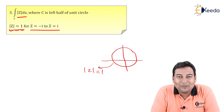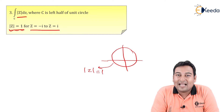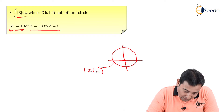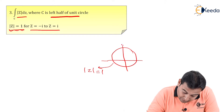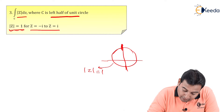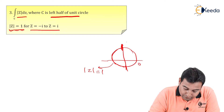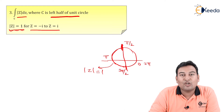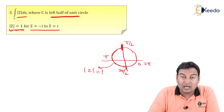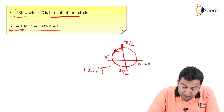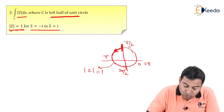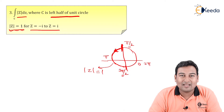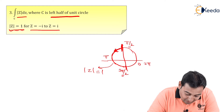Remember the note: whenever the direction is not mentioned, we always consider the anti-clockwise direction. Now in this problem, the left half of the unit circle — this is 0, π/2, π, 3π/2, and finally 2π. Ideally, the left half means going from π/2 to 3π/2, but there is a twist — something specific is given in the problem, so let us read and understand.